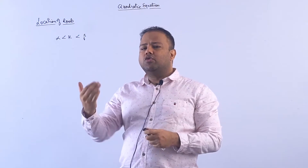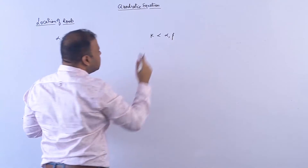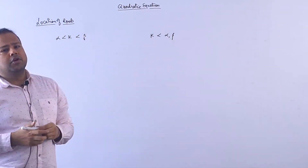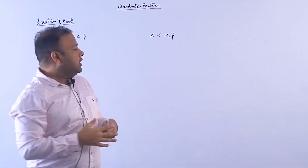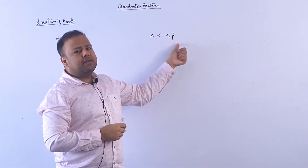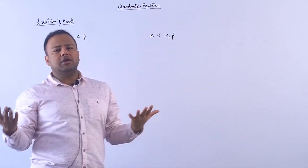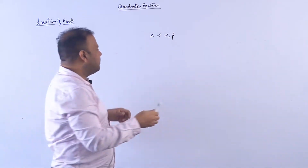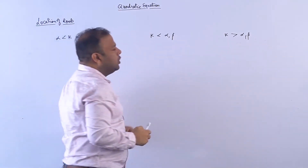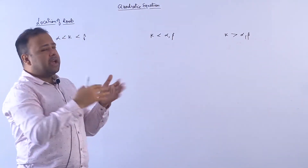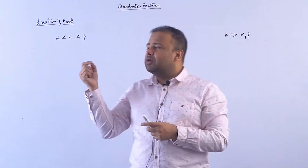One root will be less than two and one root will be greater than two — we say two lies between the roots. Some number k, for example two, lies between the roots. The second condition is that k is less than both the roots, meaning k is smaller than both alpha and beta. Or we say both the roots are greater than two, greater than three, greater than minus one, greater than zero, something like that. Then it may be that k is greater than both the roots — some fixed number is always greater than both roots.